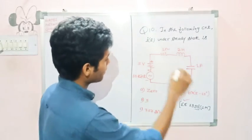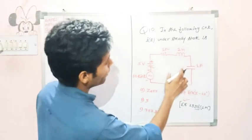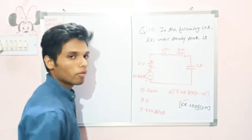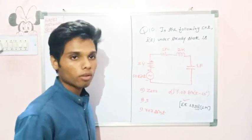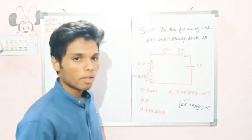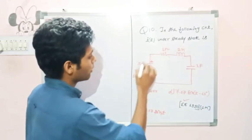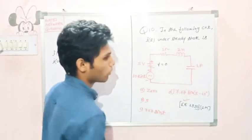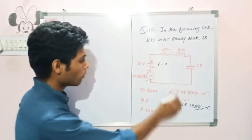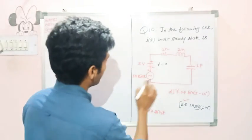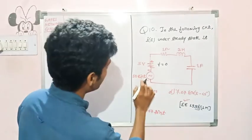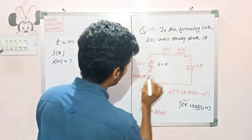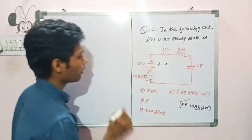In this circuit, it is an RLC circuit consisting of two different types of sources, both having different frequencies. The DC source has frequency f equal to 0, and the 10sinT source has a different, non-zero frequency.